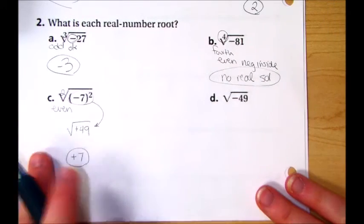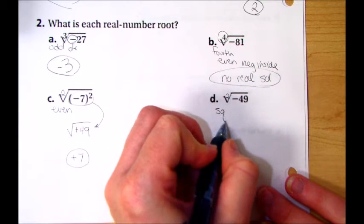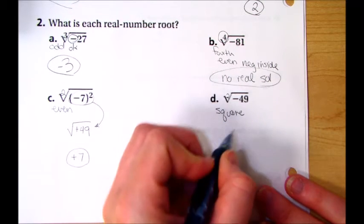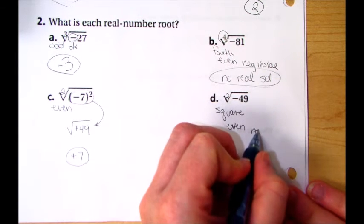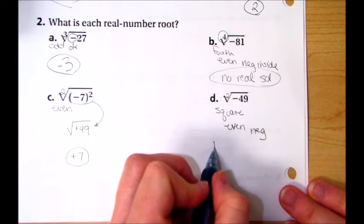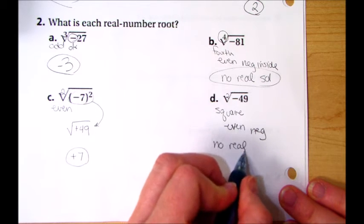Part D. I have a square, which is even, and I have a negative inside that can't be fixed. So I'll write no real solution.